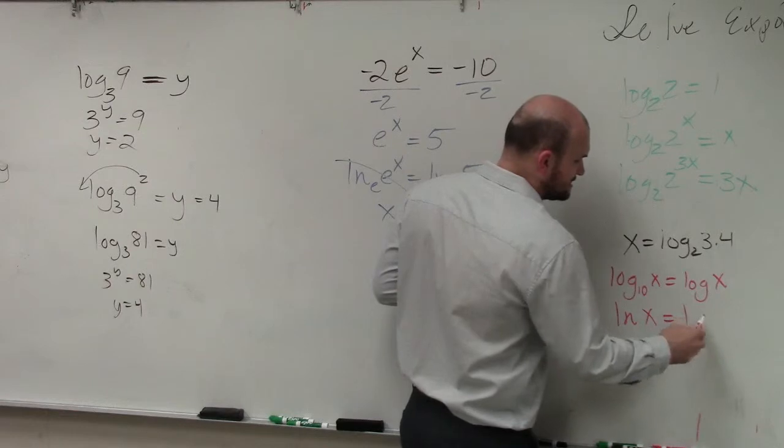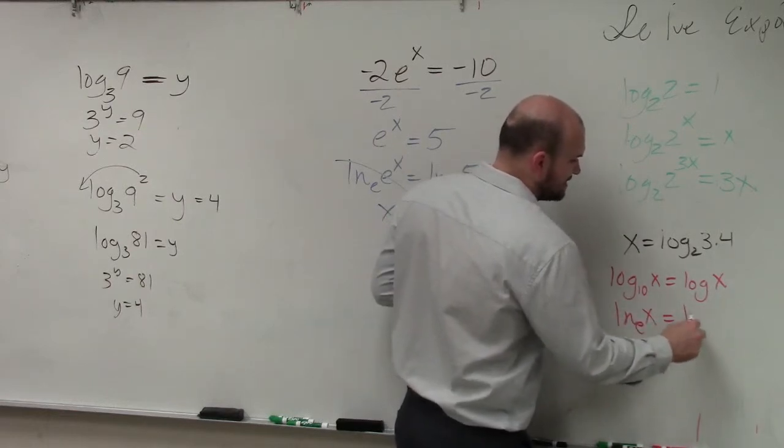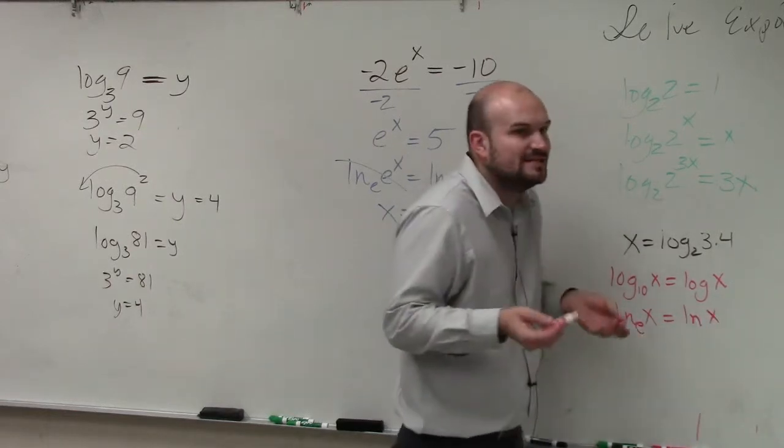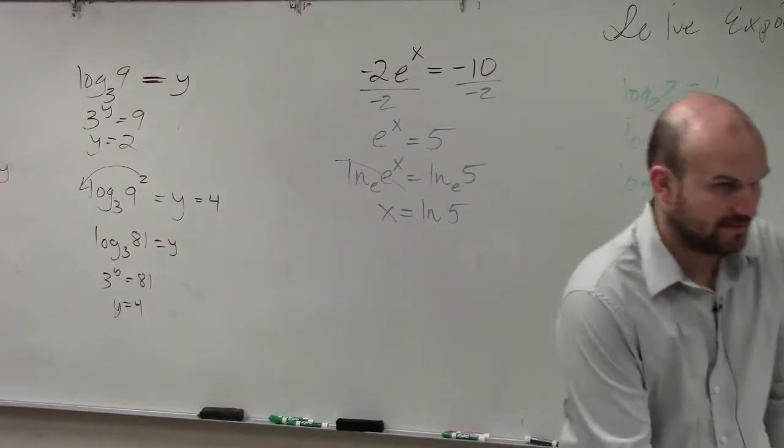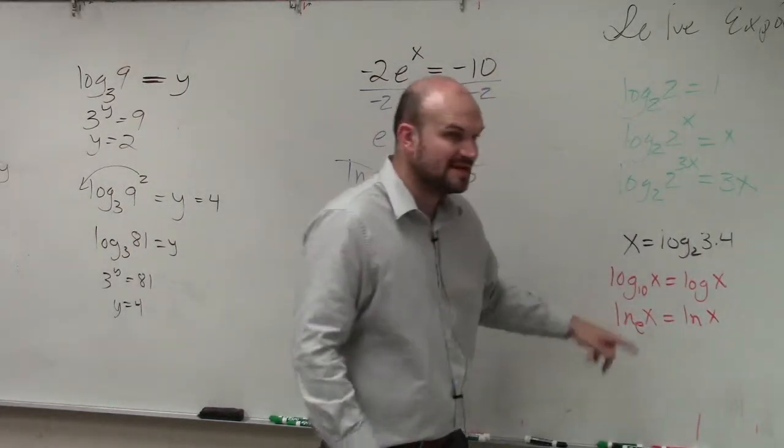ln of x is the same thing as... Oh, I'm sorry. ln e of x is just ln of x. We don't need to write in the e. Okay? So what I'm telling you is when you have ln of x, that is base e.